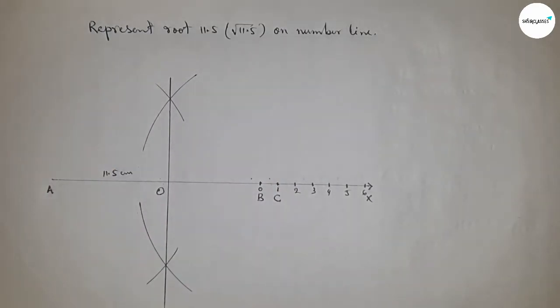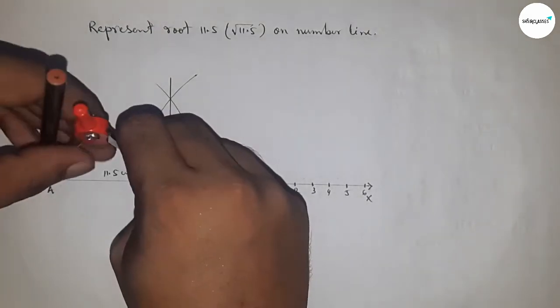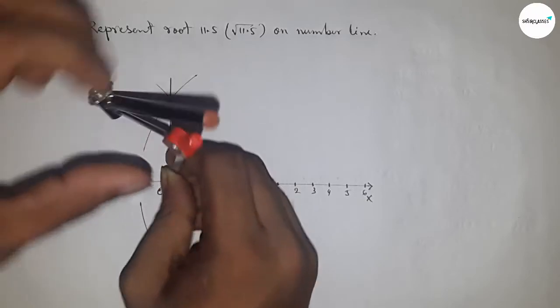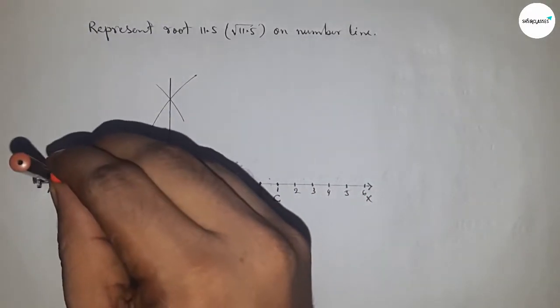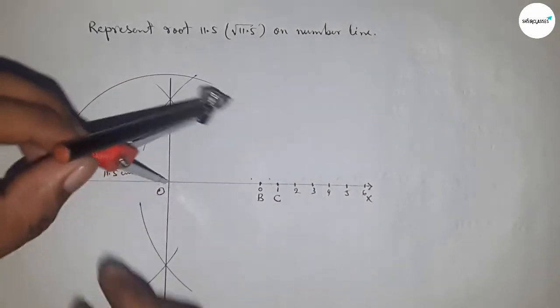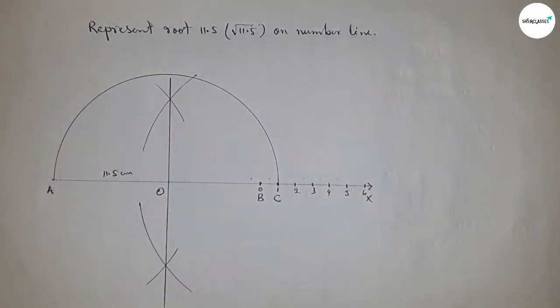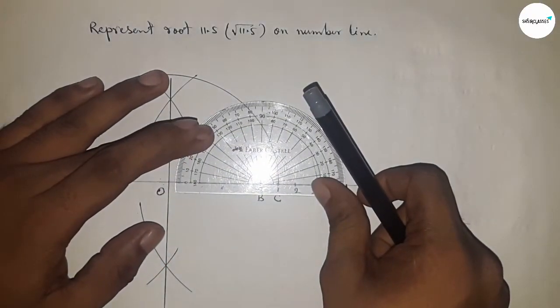The lines intersect at point O. Now take the length OA and OC to draw a semicircle through points A and C. First, draw a semicircle. Next, draw a 90-degree angle on point B by using a protractor.